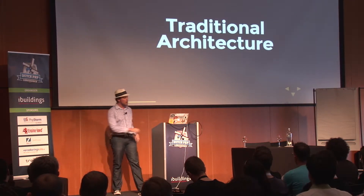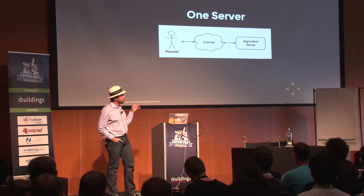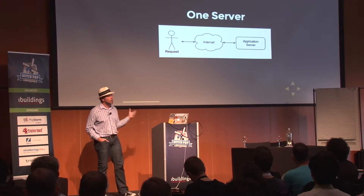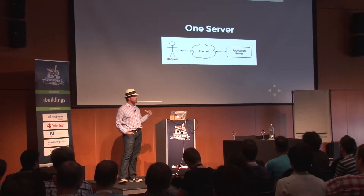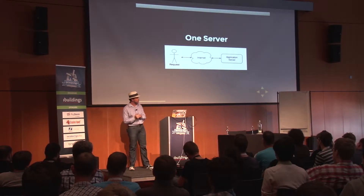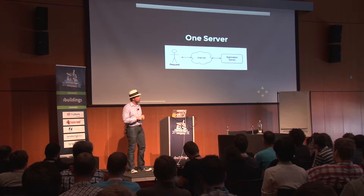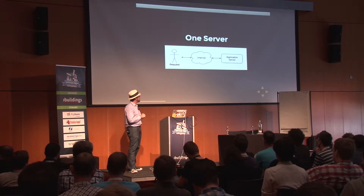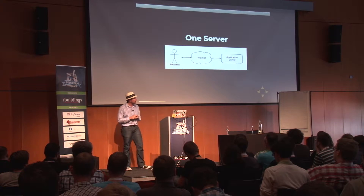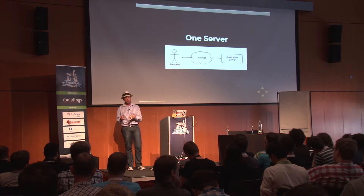I want to talk about the traditional infrastructure. The most simple, naive way to do a web infrastructure is you have one application server responding back with HTML, doing whatever your big application does. Somebody makes a request, it goes through the internet, gets routed to the server, and that server does something. This is really easy to understand and very approachable, especially when you're first starting out. But it doesn't actually scale very well — as requests come in, it bottlenecks.